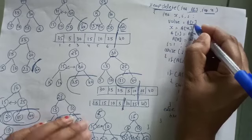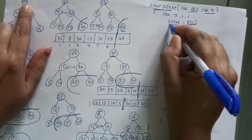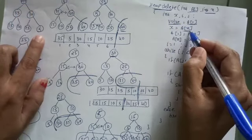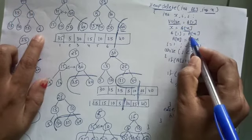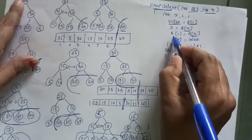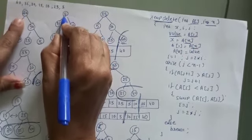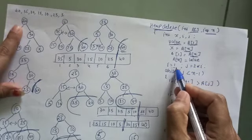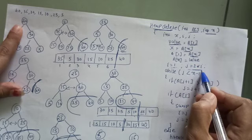So initially A of 1, that 40, I will store it somewhere in a value. Then A of n, 5, I have stored it in x. Now A of n, that is 5, is now A of 1, so 5 will take place of 40. And now I is equal to 1 and J is equal to 2 multiply I.